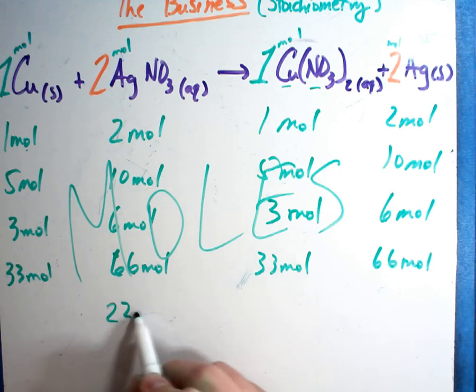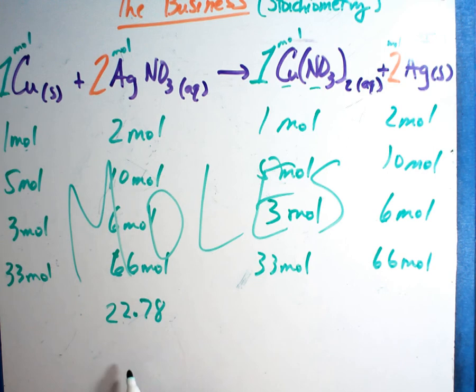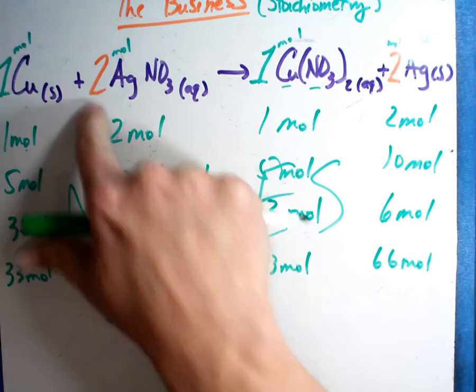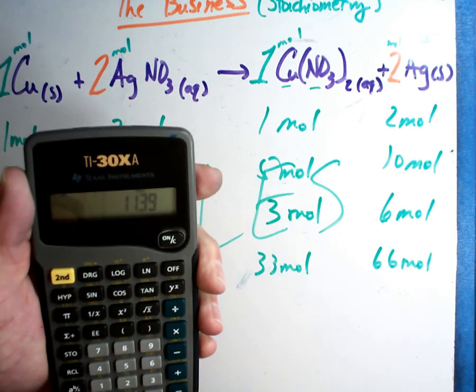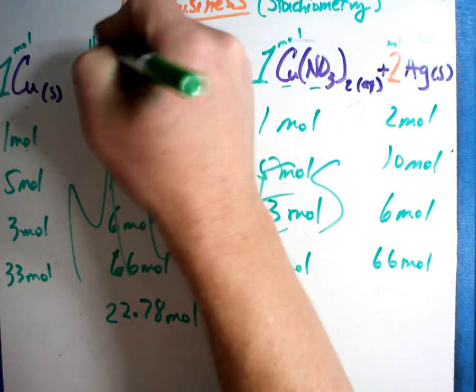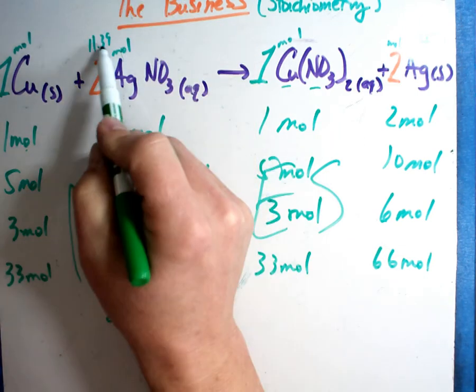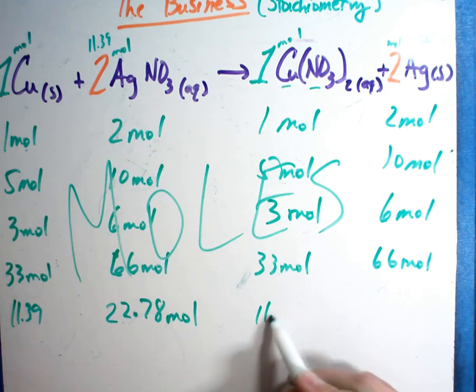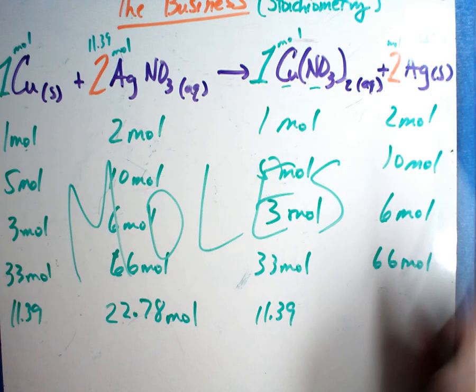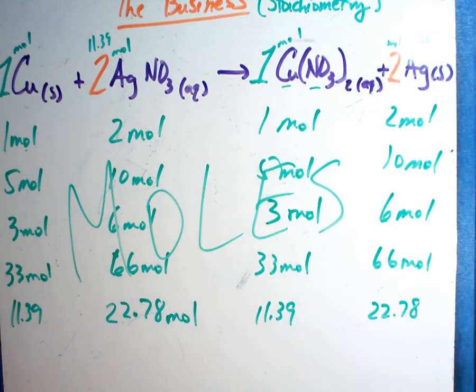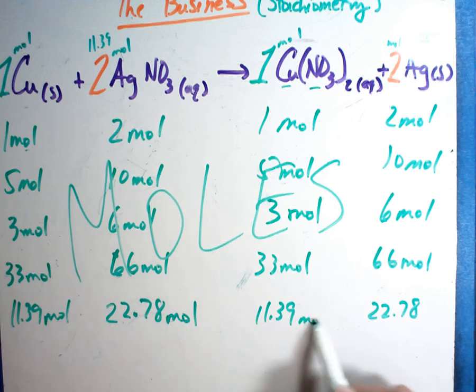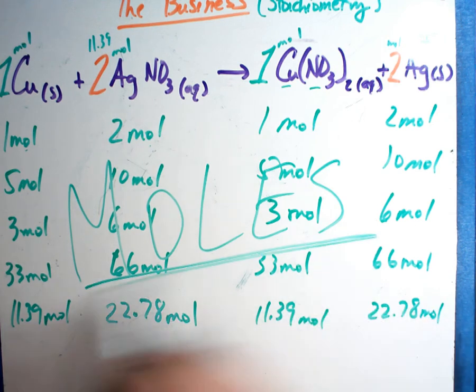So, what happens if you have 22.78? And I needed all the other answers. Grab your calculator. Can't do it in your head. 22.78 divided by 2 is 11.39. There's my change. 11.39 times 1, well this is 11.39. 11.39 times 1, 11.39. 11.39 times 2 is the 22.78. I can calculate any value and they're all in moles. I can do all this work when it's in moles. It's all about moles. Even if you have very odd numbers.